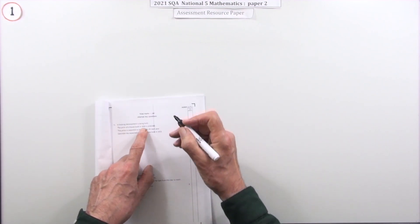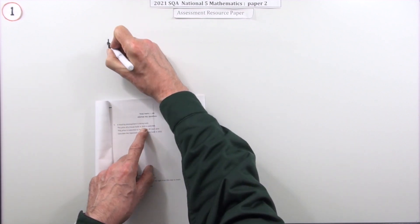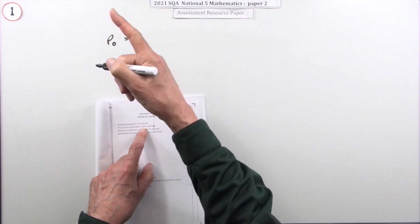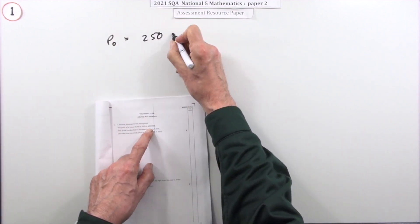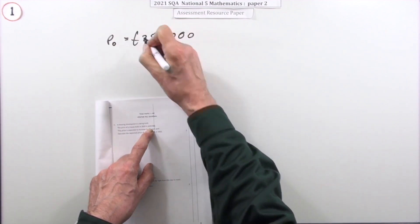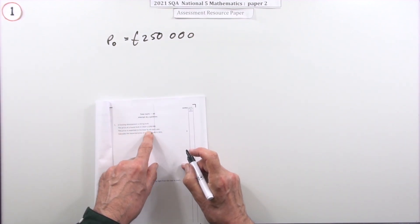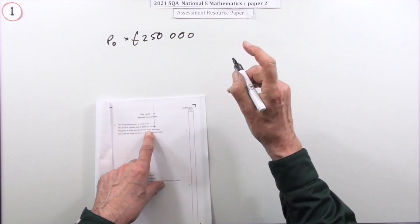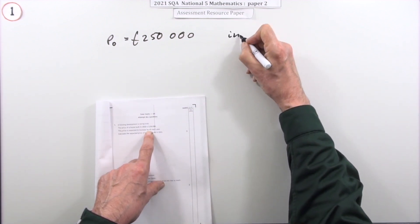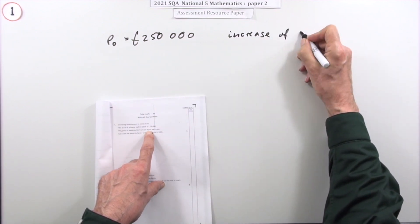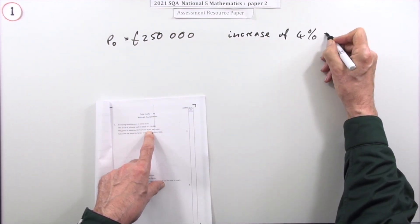What does it say? The price of a house built in 2020, so I'll call that P₀ standing for the price at the start, is £250,000. You don't need to write this down, I'm just putting this down to have something to look at. I'm going to put that away. It's meant to increase by 4% each year, so you'll need to put this bit down to show that because this is the critical bit to the calculation.